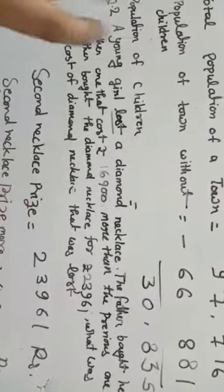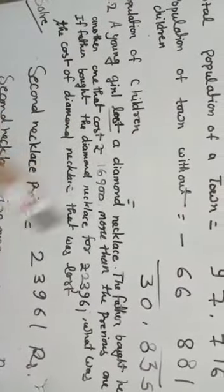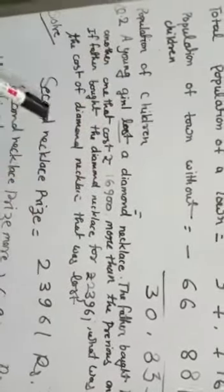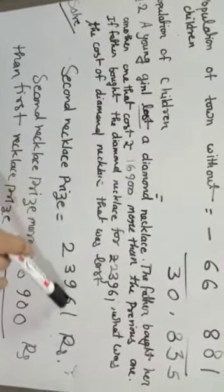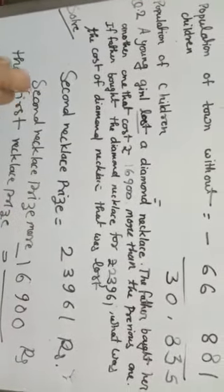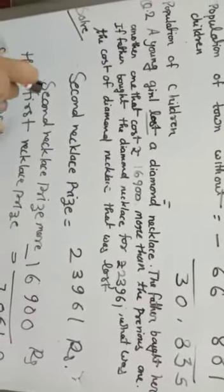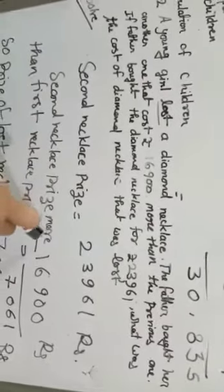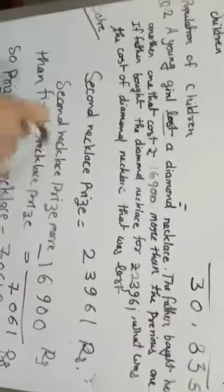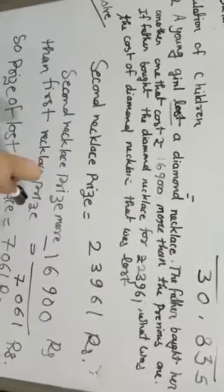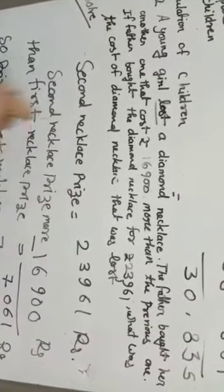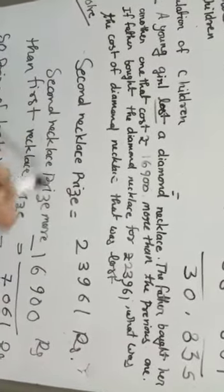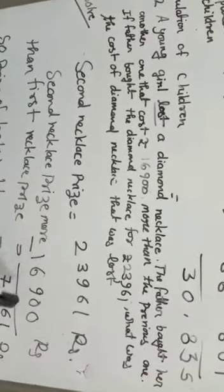Now, you have to write the number of your necklace from Rs. 16,900. What was the cost of the diamond necklace that was lost? The second necklace price is Rs. 23,961. The second necklace price is more than the first necklace. How much more is it? It is Rs. 16,900.